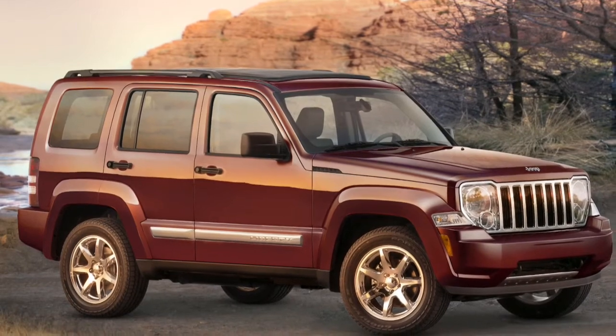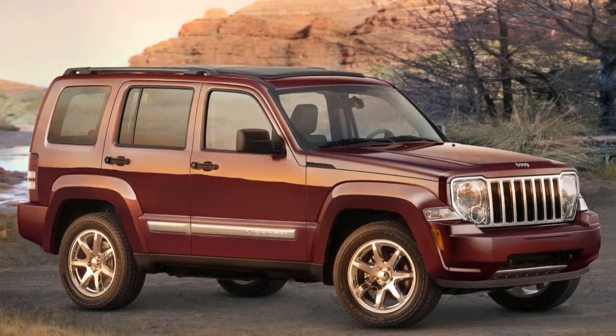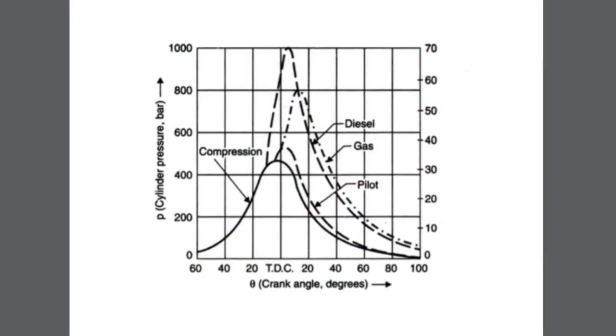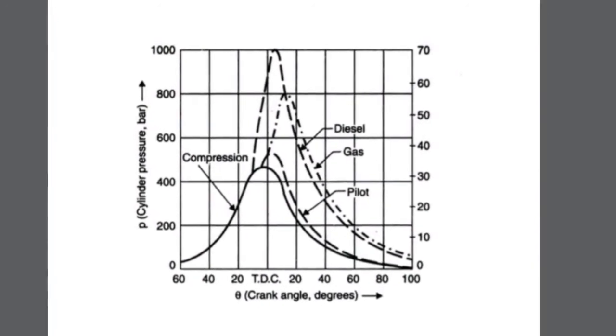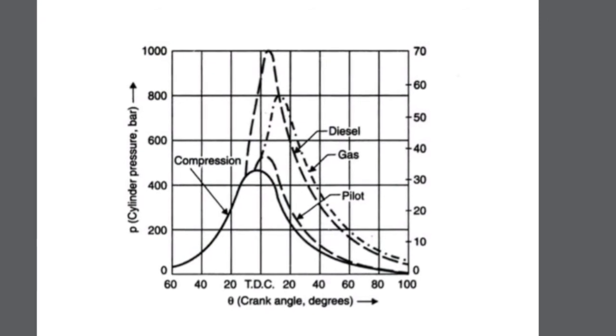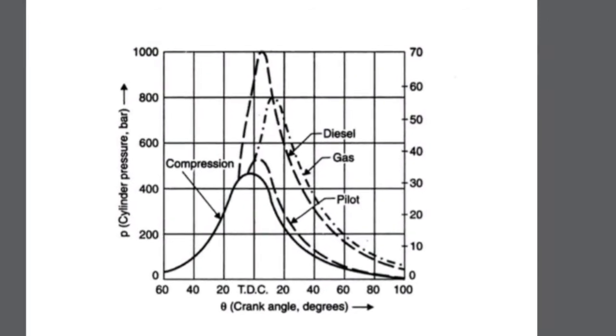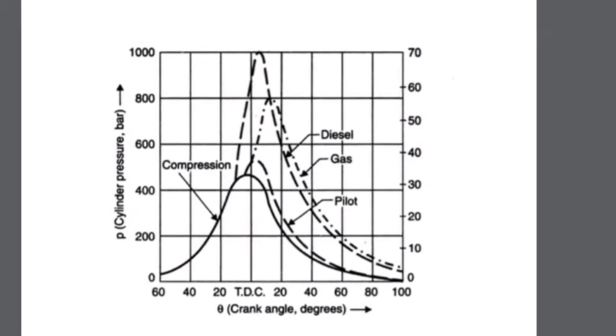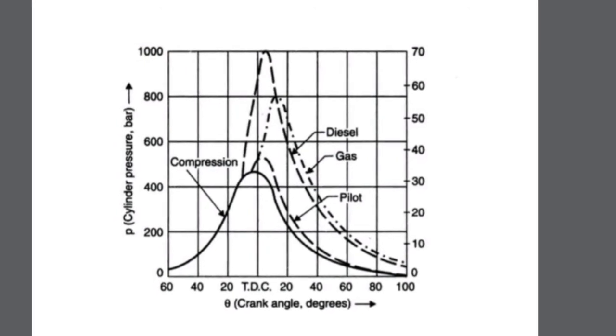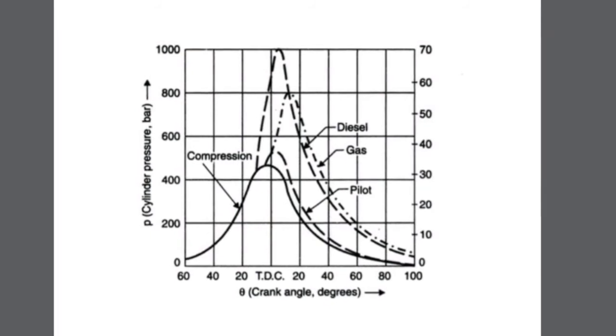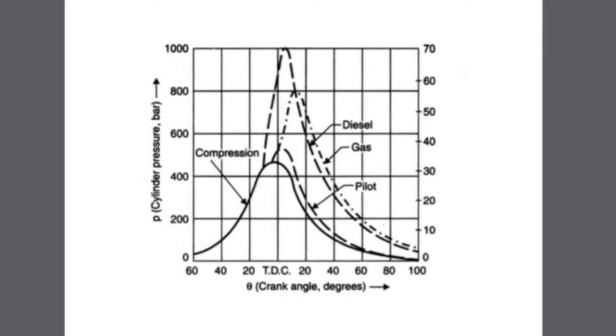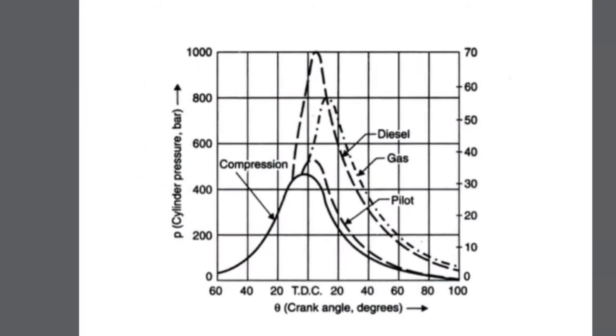This figure shows the P-theta diagram of a dual fuel engine. Here you can see the crank angle is shown in the x-axis and the pressure is in the y-axis. The peak pressure is produced by the liquid fuel only and the lowest pressure is produced by only using the pilot fuel injection. By combining it with a gaseous fuel we will get a pressure raise that is in between the operation of liquid and the pilot fuel.